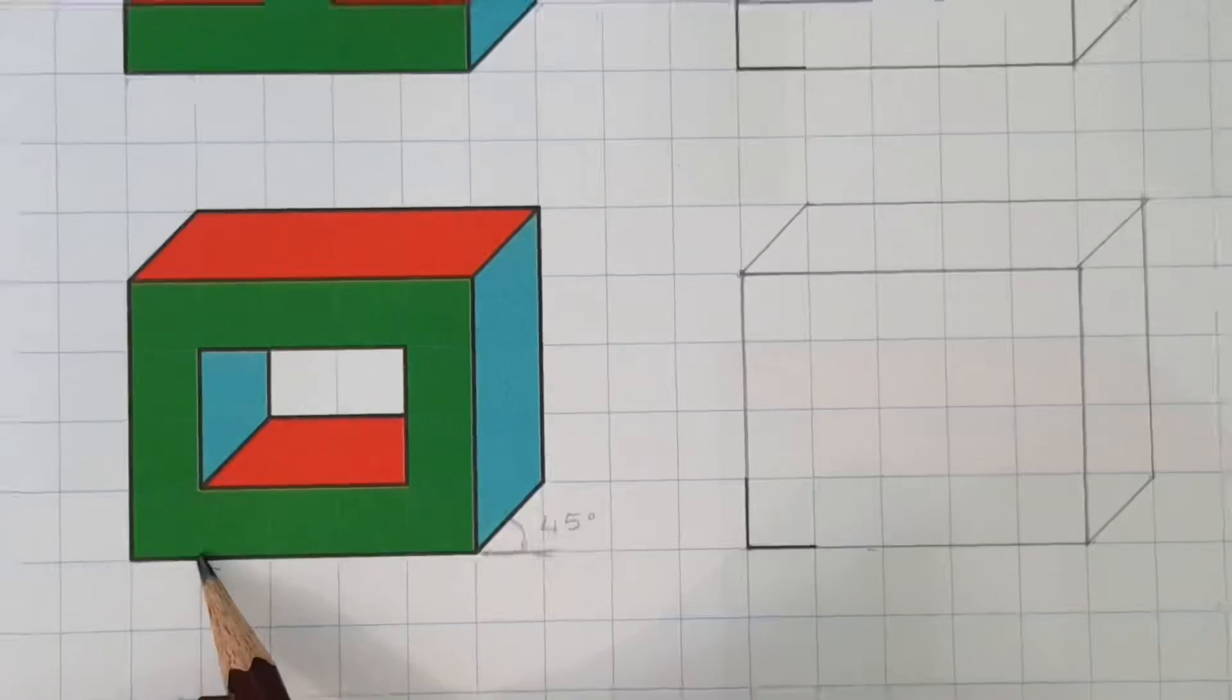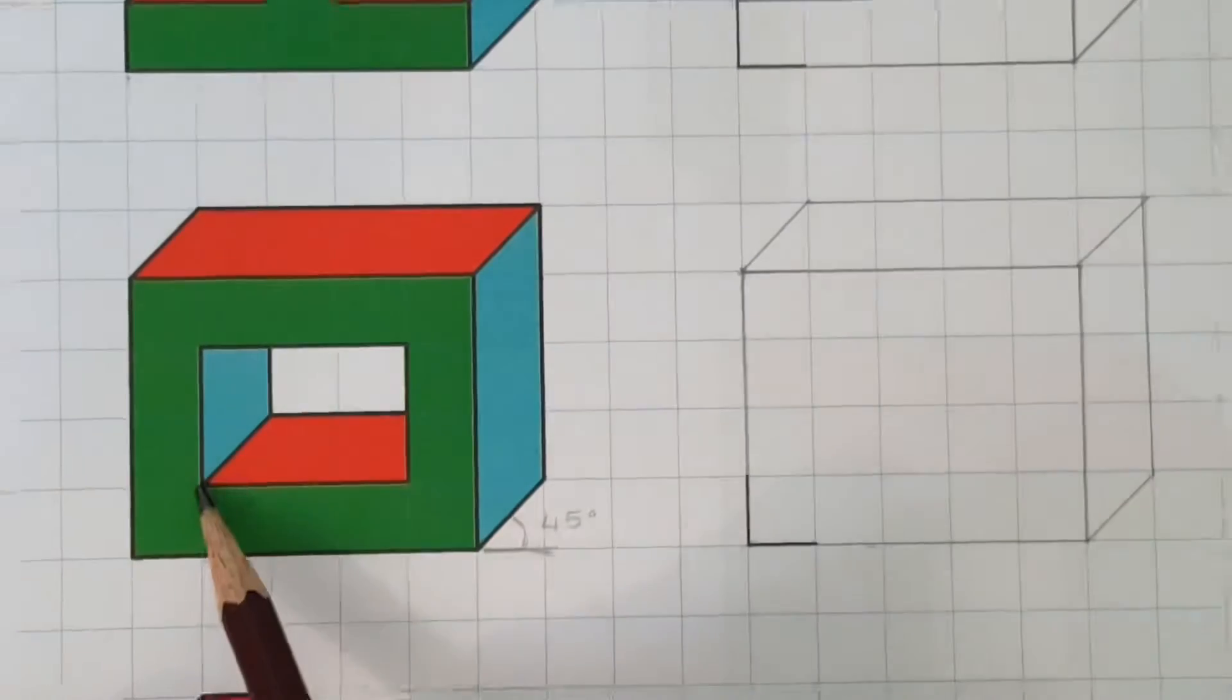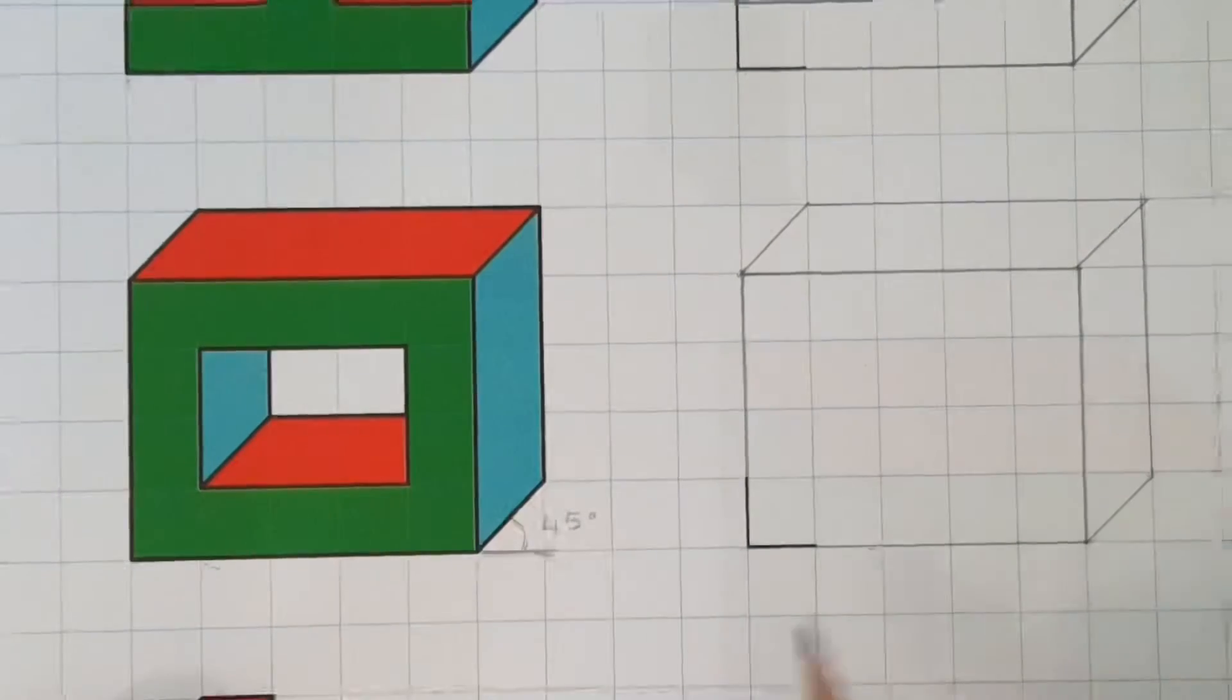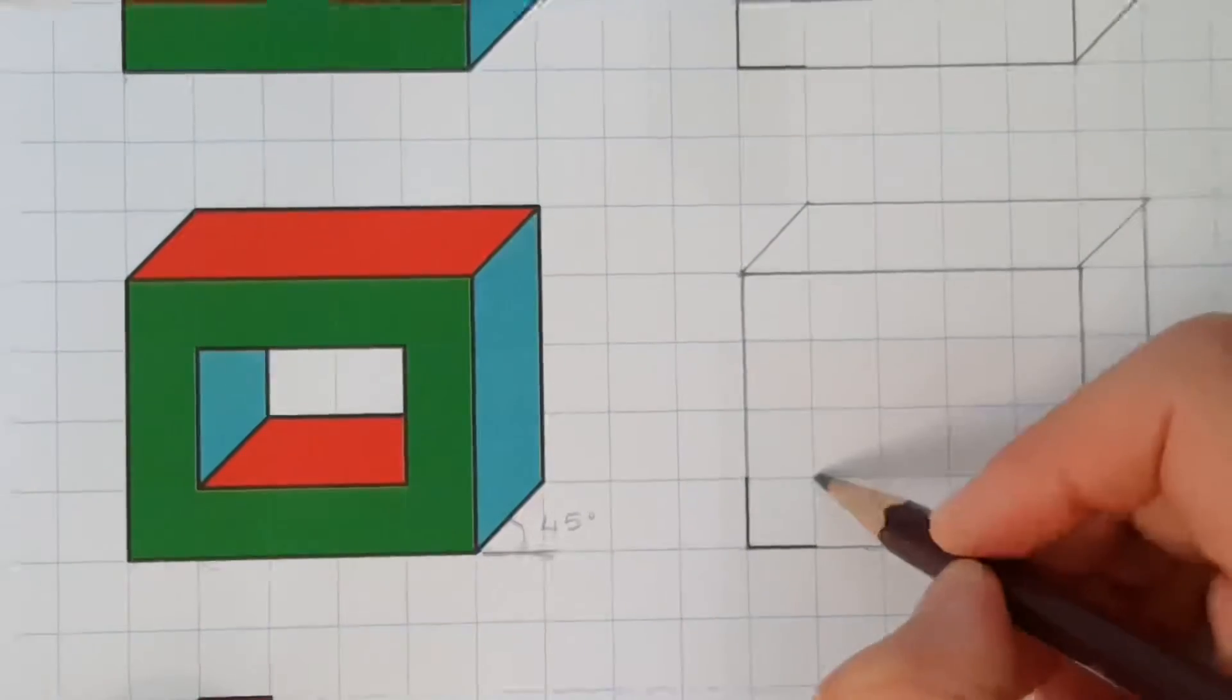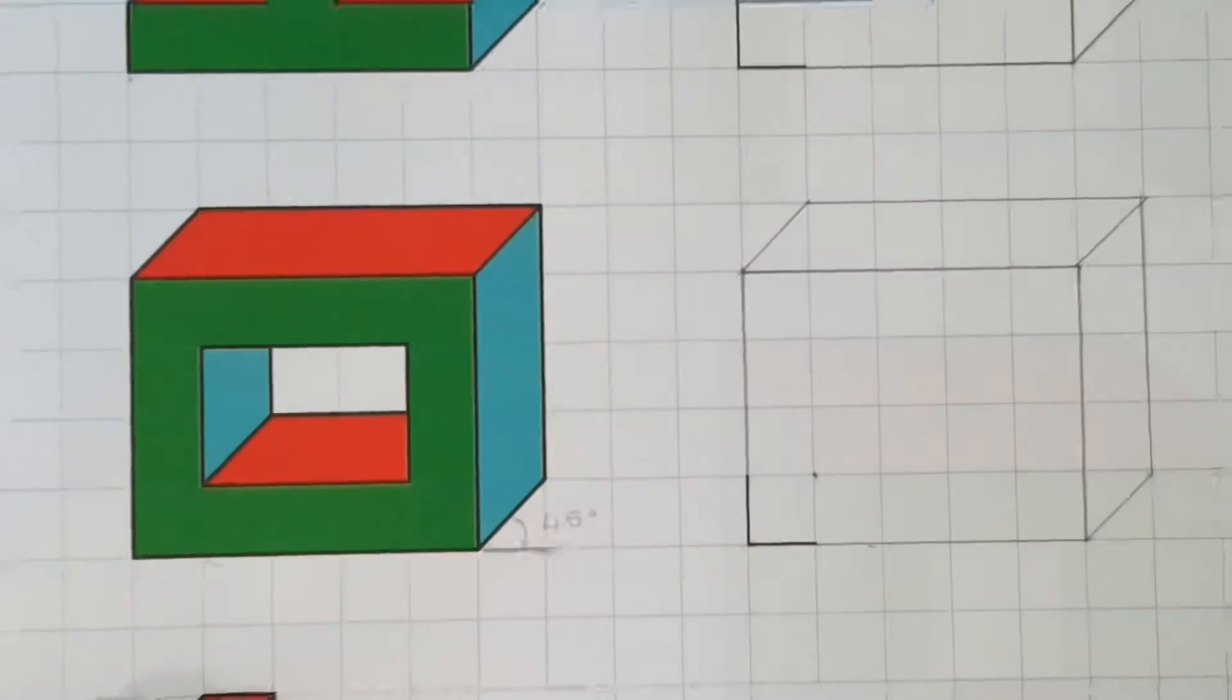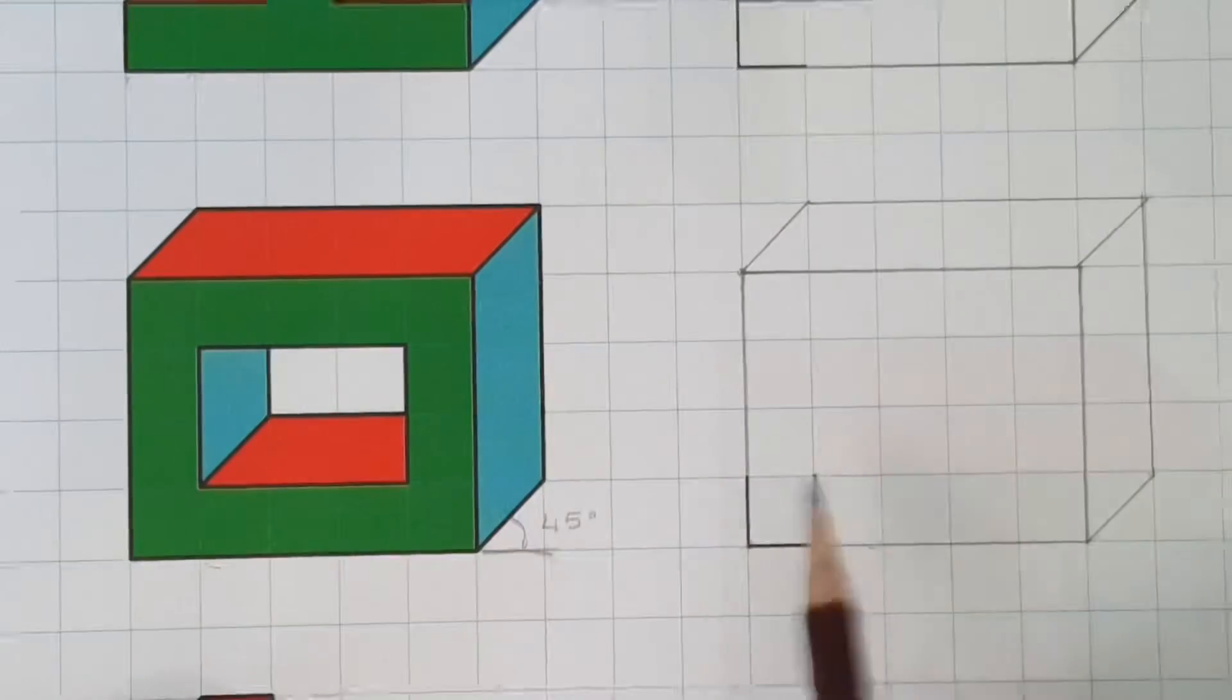That corner is one square to the right on the base and then one square up. So one square to the right and one square up. Mark that corner if you find it helpful.